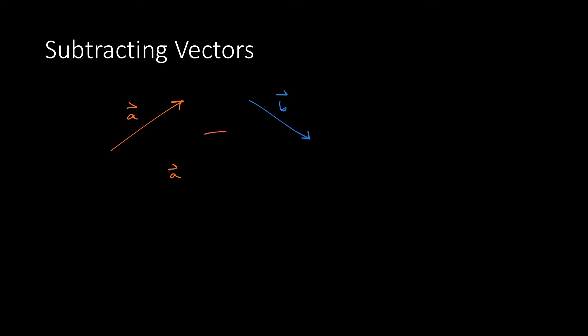Let us look at an example of this using the tip-to-tail method. Here we have vector b being subtracted from vector a. We will redraw vector a as before.